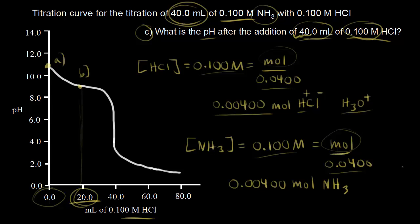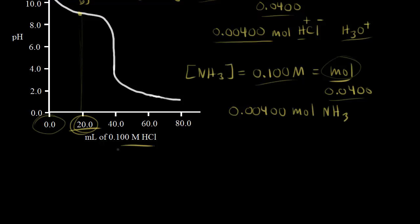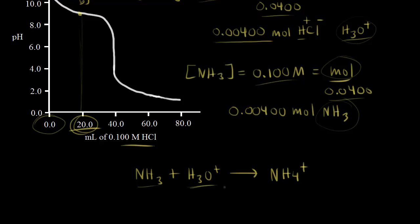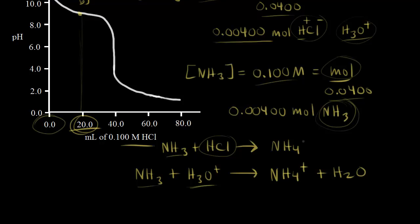The acid we added is going to react with the base we started with, so let's write out the neutralization reaction. One way: NH₃ + H₃O⁺ → NH₄⁺ + H₂O. H₃O⁺ donates a proton to ammonia, turning NH₃ into NH₄⁺. The other way: NH₃ + HCl → NH₄⁺ + Cl⁻. HCl donates a proton to NH₃ giving NH₄⁺, and the chloride anion is the conjugate base.